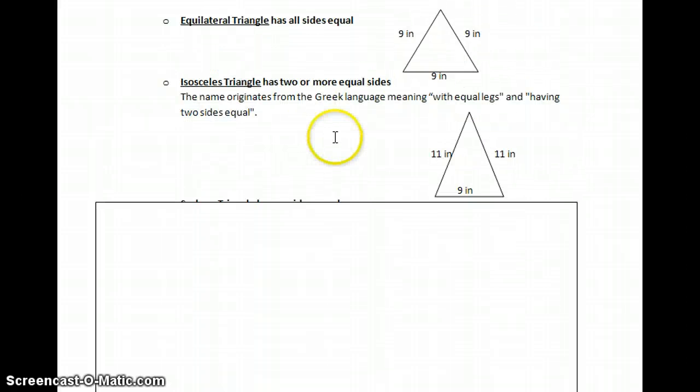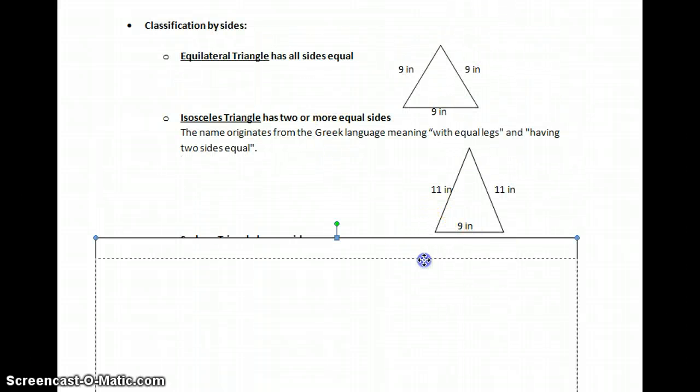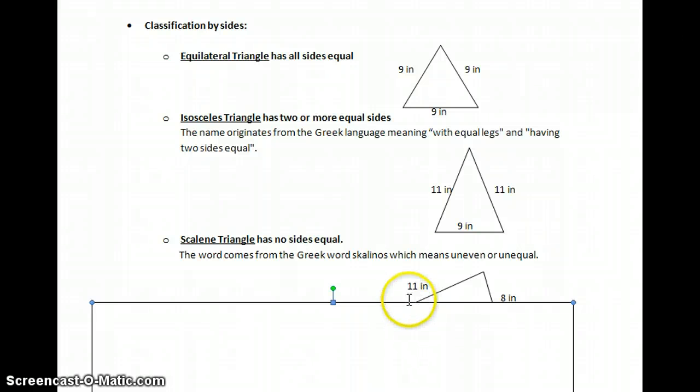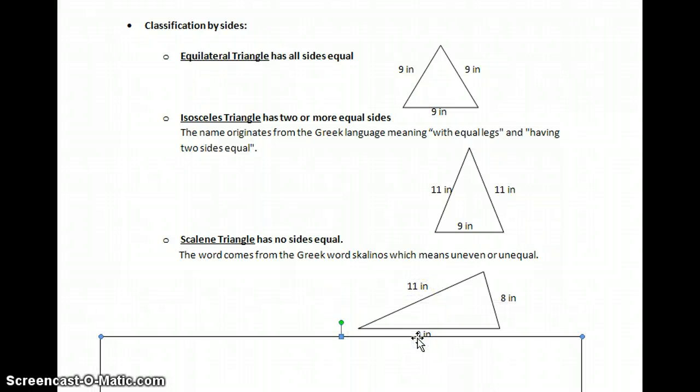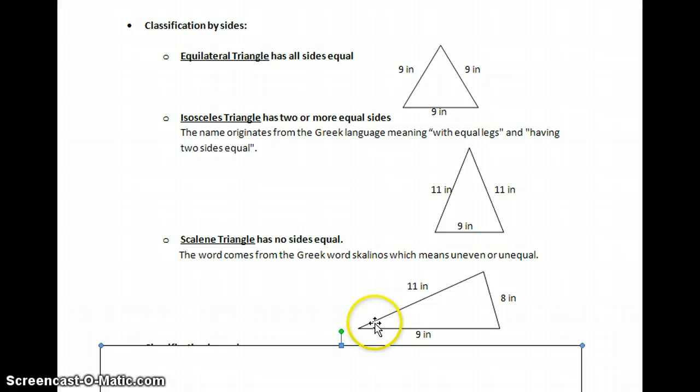And our third type—let me scroll this down so you can see them all at the same time—is scalene. It has no sides equal, and it comes from the Greek word scalinos, which means uneven or unequal. You just have to try to remember that.